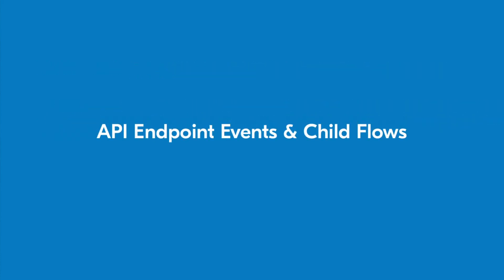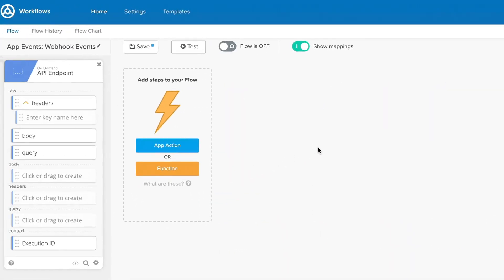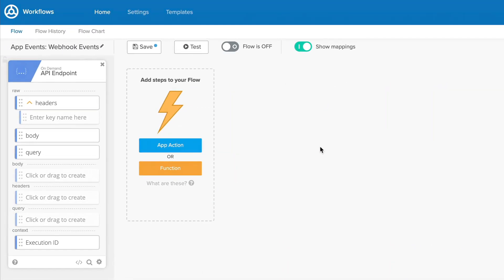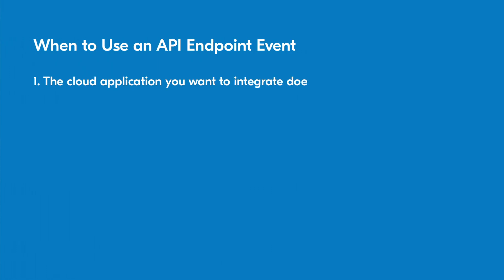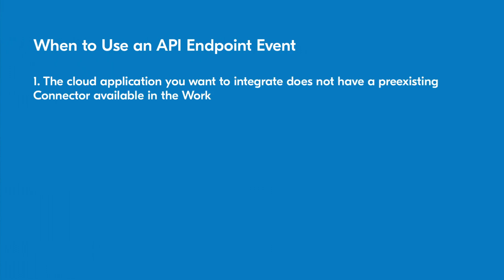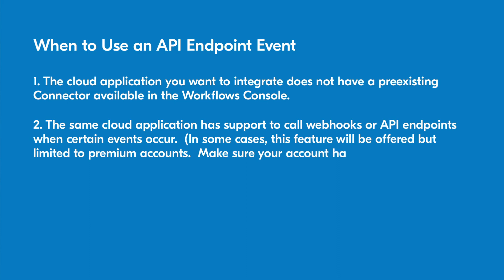API endpoints and child flows are more advanced topics that we'll discuss further in a later lesson. But before we wrap up, let's discuss some general concepts you should know about API endpoint events. API endpoint events work like the webhook events we discussed earlier, but they require a manual setup. You will want to use API endpoint events in a situation where: 1. The cloud application you want to integrate does not have a pre-existing connector available in the workflow's console. 2. The same cloud application has support to call webhooks or API endpoints when certain events occur. In some cases, this feature will be offered but limited to premium accounts. Make sure your account has this feature if you want to use it with API endpoint events in Okta Workflows.